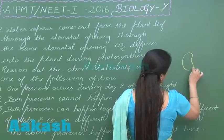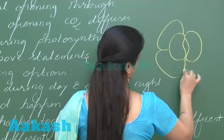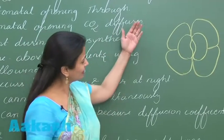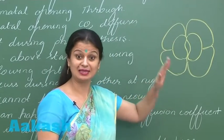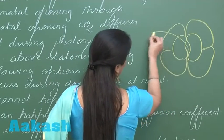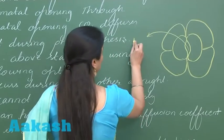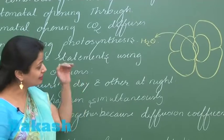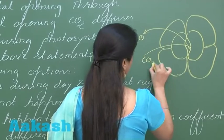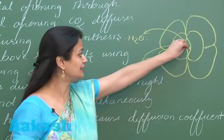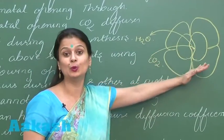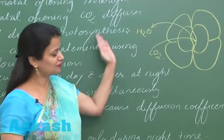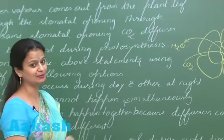This is the stomatal pore — the stomatal apparatus. When the water content in the atmosphere is less, there is loss of water from the stomatal pore in the form of water vapor. At the same time, carbon dioxide moves inside, diffusing from higher concentration to lower concentration. So water comes out and carbon dioxide diffuses inside; both processes occur simultaneously during the daytime.